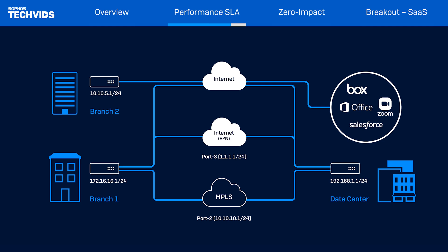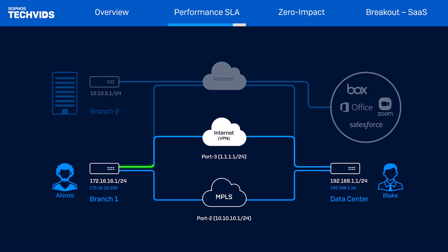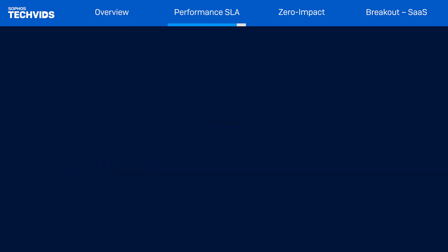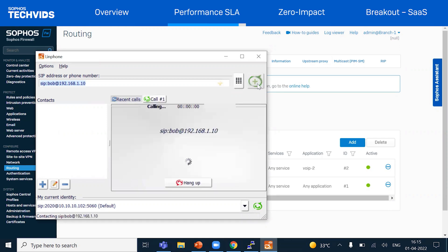Now that we have the profiles and routes set up, let's test. Going back to our network topology, let's say Alonzo at branch one is trying to call Blake at the data center. Based on the configuration, the call will be routed through the VPN link. Now to ensure failover is working, we'll inject some delay into the VPN link so that once the system detects that delay, it switches over to MPLS. For making the call, I'm using an open SIP phone using SIP and UDP protocols. Let's go ahead and make that call. And now we're connected.